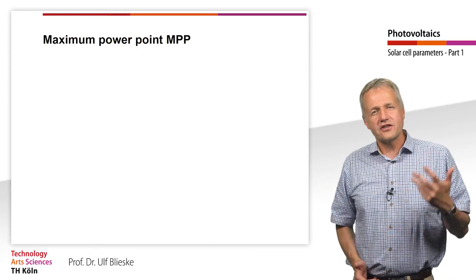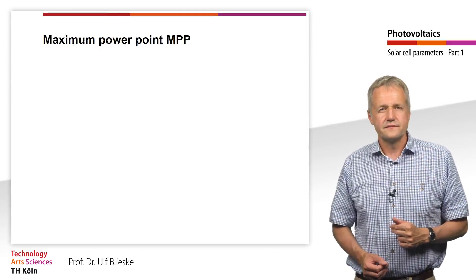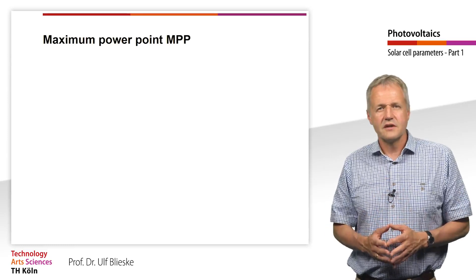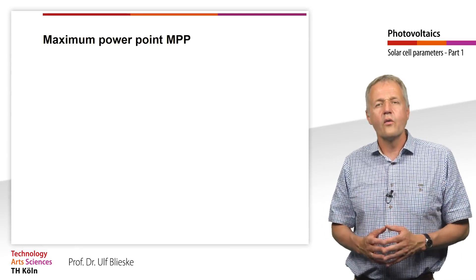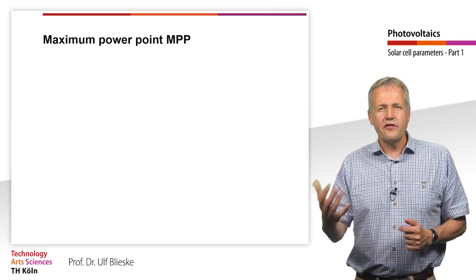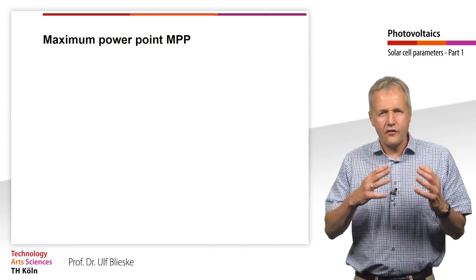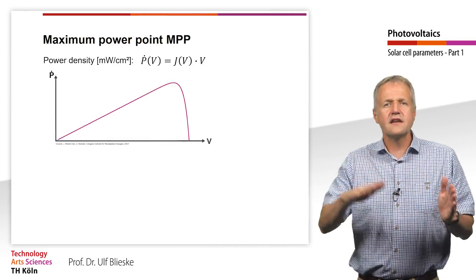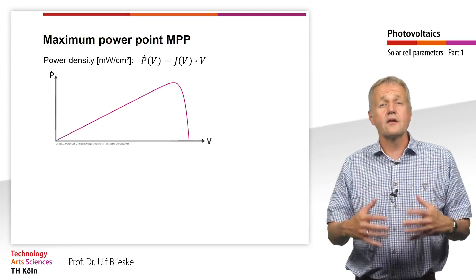Next, we will answer the question of how much power a solar cell can deliver. The power is the product of current and voltage. Since we consider current densities and not currents, we also relate the power to the area of the solar cell. We define the power density, which is the product of current density and voltage. We can also plot the power density as a function of voltage just like the current density and get the PV curve.